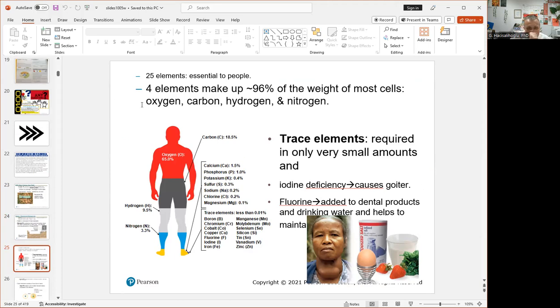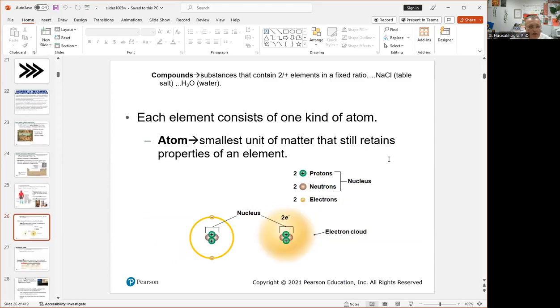Four of them make 96%: oxygen, carbon, hydrogen, and nitrogen. Then there are other large ones, and smaller ones called trace elements. Trace means they're needed in very small amounts, trace amounts, including zinc, iron, copper, and manganese. All these 118 elements are elements because they're all unique and have atoms of that element.